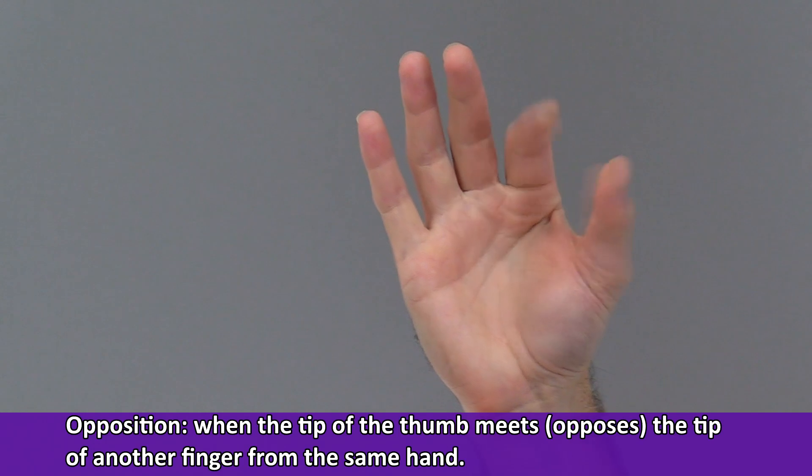Opposition of the thumb occurs when the tip of the thumb comes to meet and oppose the tip of another finger from the same hand.